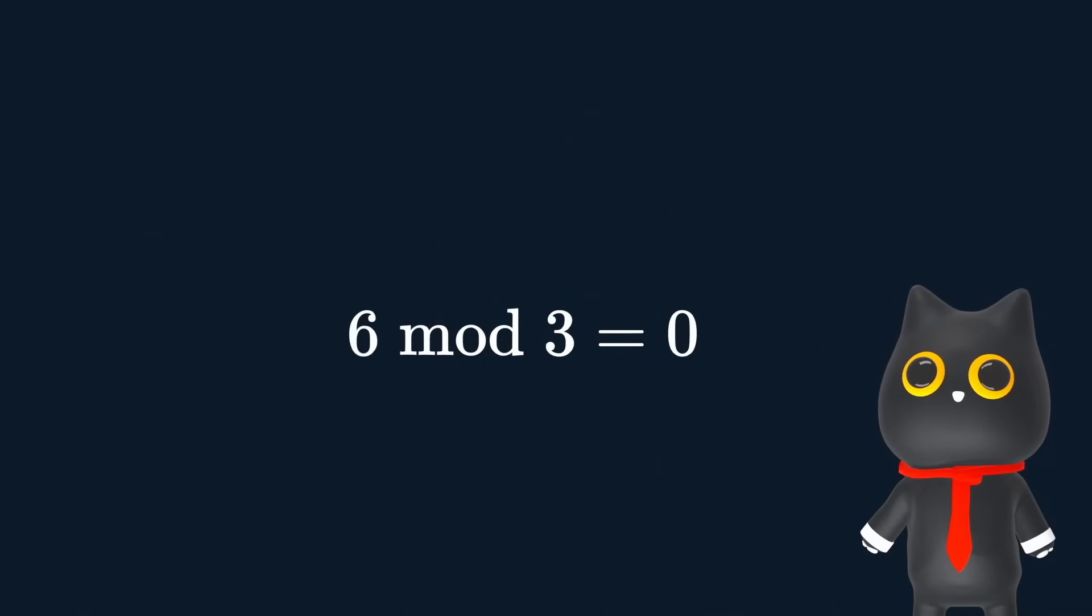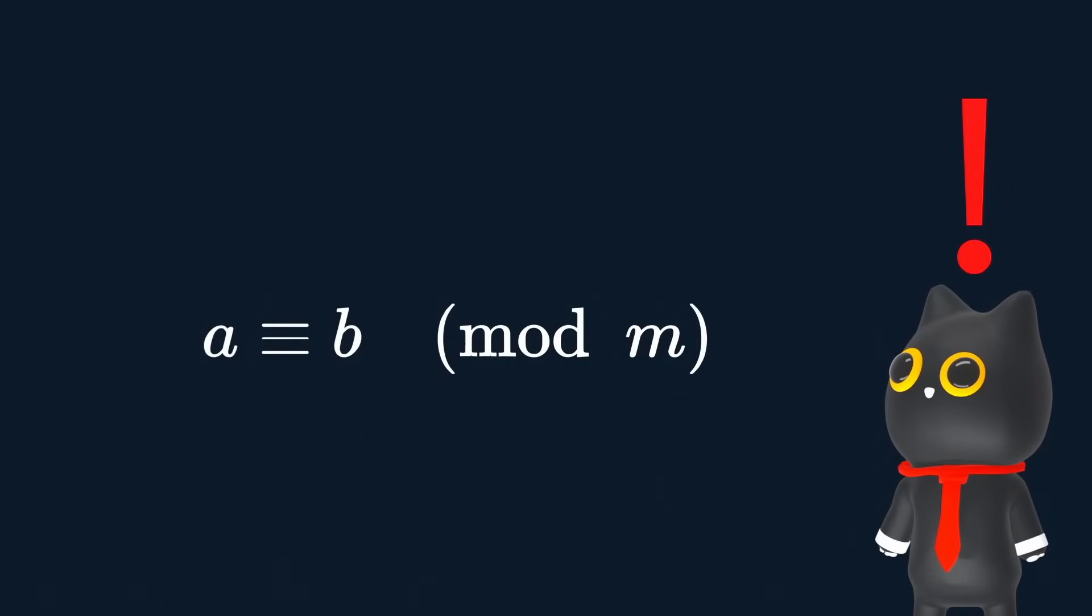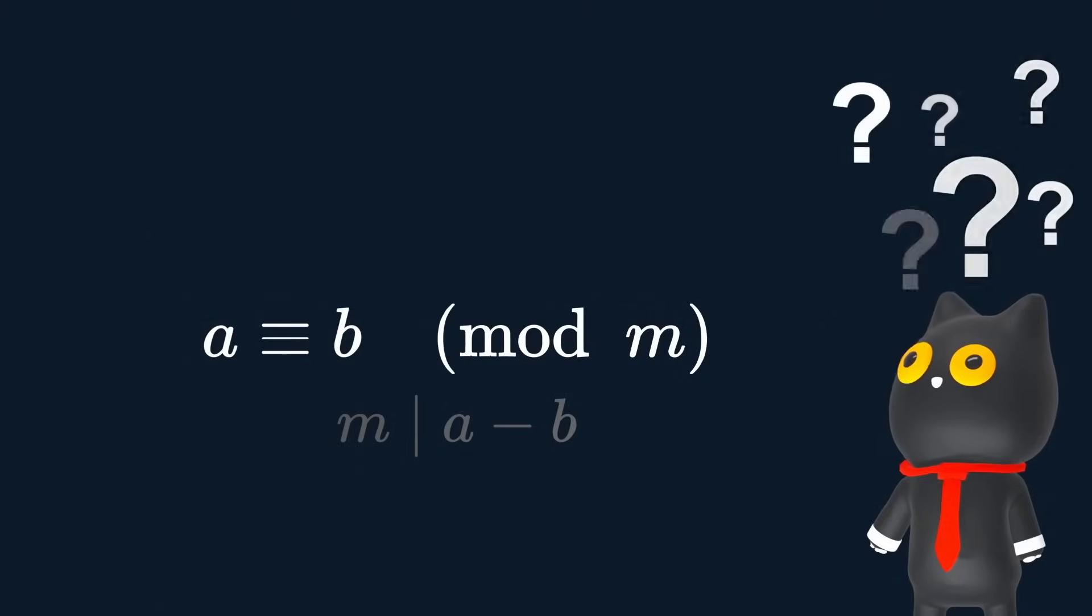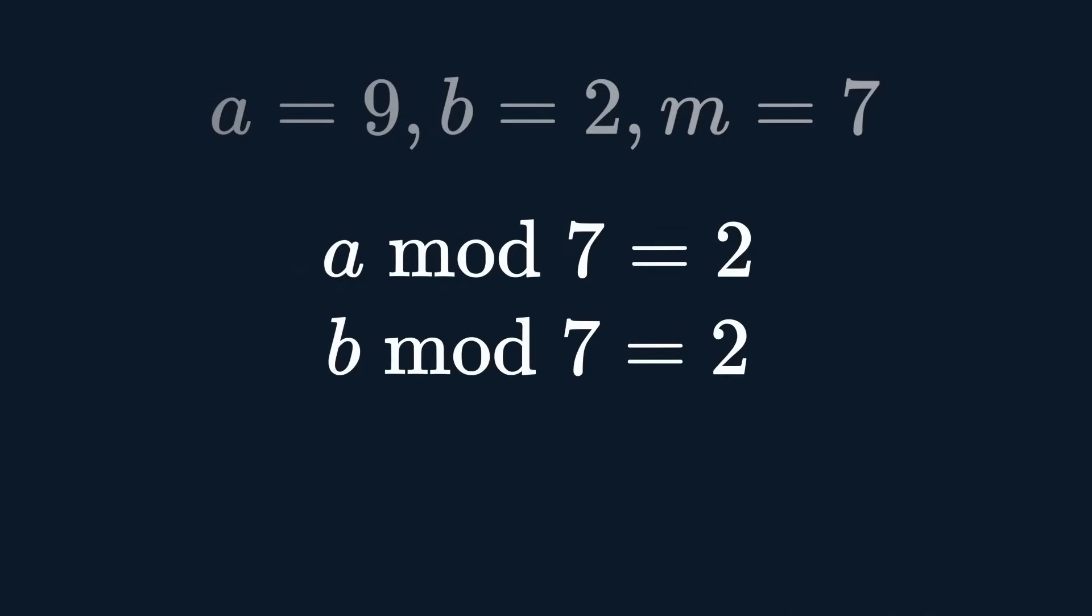In case you forgot how modulo works, it just gives the remainder of a division operation. So 5 mod 3 is 2, 6 mod 3 is 0, 10 mod 3 is 1. Oh, did I mention a special fact where A is congruent to B under modulo M arithmetic, whenever M divides A minus B? Hold up, what does all that jargon mean? So imagine A equals 9, B equals 2, and let M be equal to 7. Since these are true, we say this to be true too.